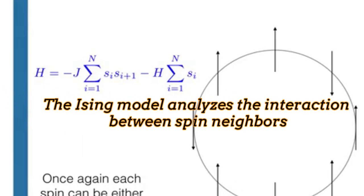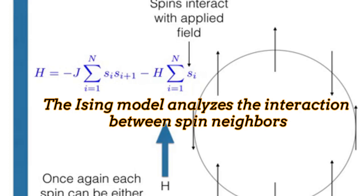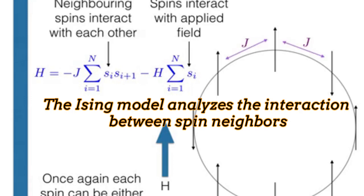The Ising Model basically analyzes the interactions of a pair of particles or close neighbors. Each particle is considered to have only two possible spins, namely a spin up or a spin down. The model also considers the possibility of applying an external magnetic field.